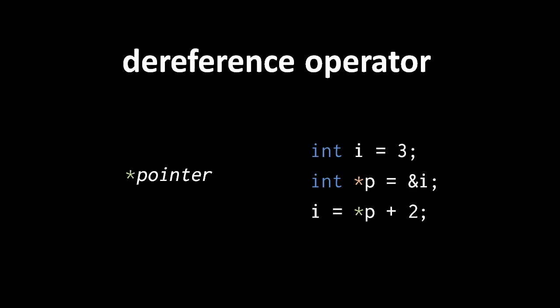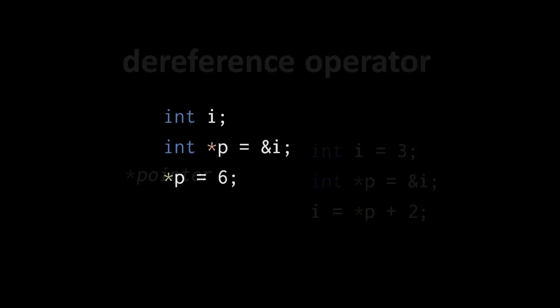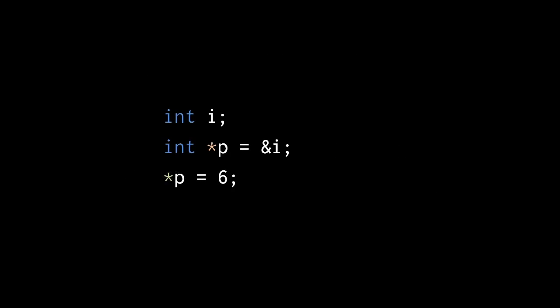Now, aside from variables, dereferencing expressions are the other primary example of L values. A dereference as the target of an assignment represents a location to which we can assign a value. So here we again have an int variable i and an int pointer variable p holding a pointer value representing the address of i.